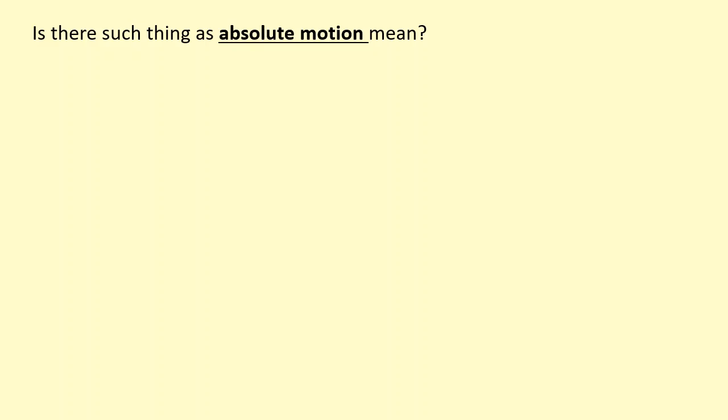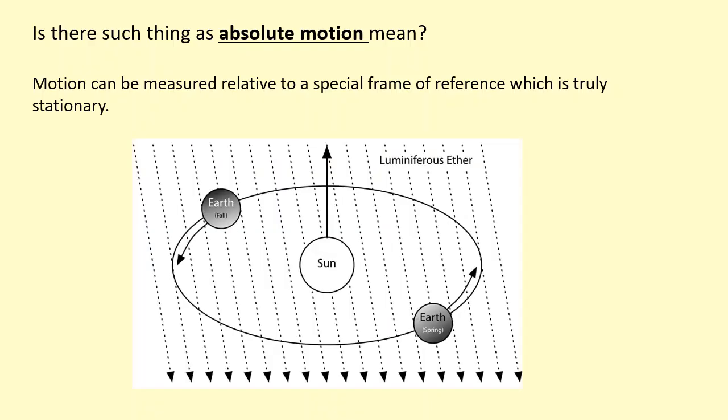Is there such thing as absolute motion? Absolute motion is motion that can be measured relative to a special frame of reference which is truly stationary. This truly stationary frame of reference is called the luminiferous ether, or just the ether.